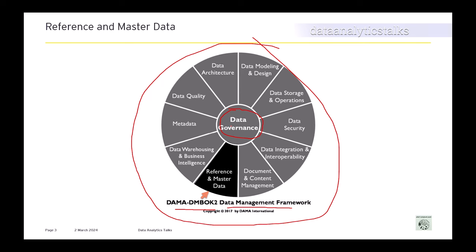The main data management activities shown in the DAMA wheel include: data architecture; data modeling and design; data storage and operation; data security; data integration and interoperability; documents and content management; reference and master data; data warehousing and business intelligence; metadata; and data quality. These are the important data management activities, with data governance occupying the center position.